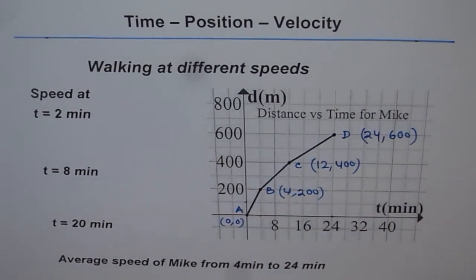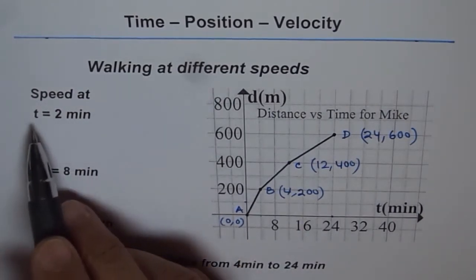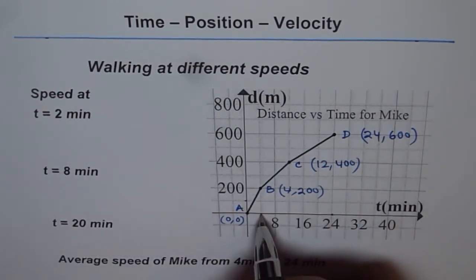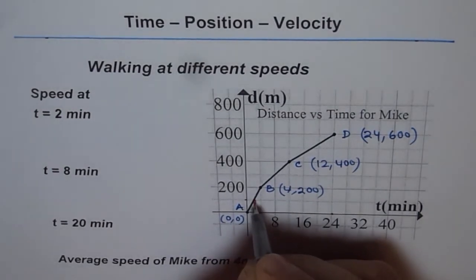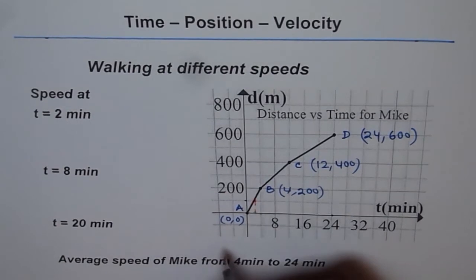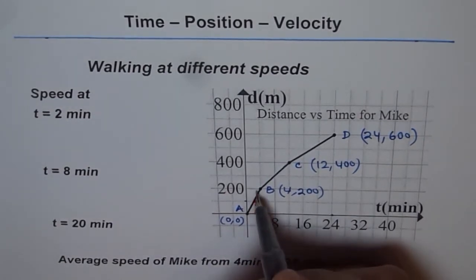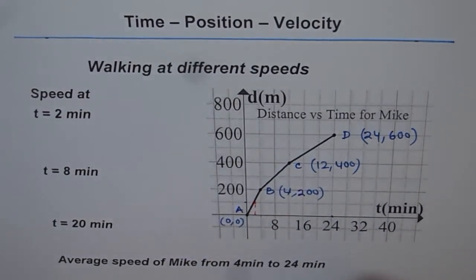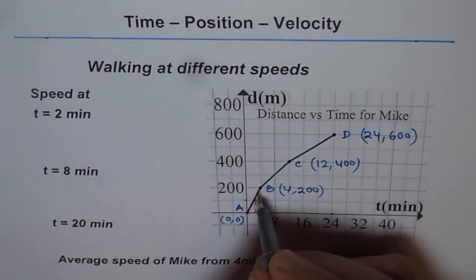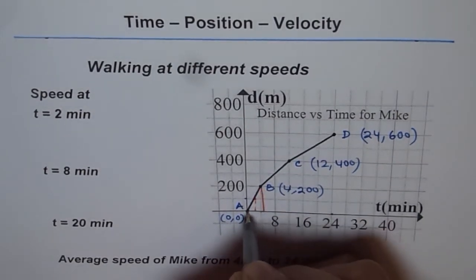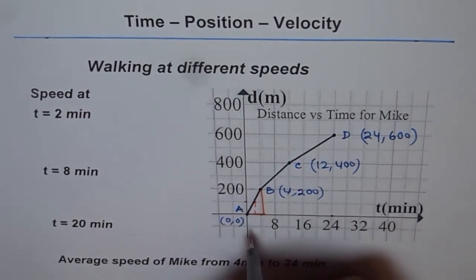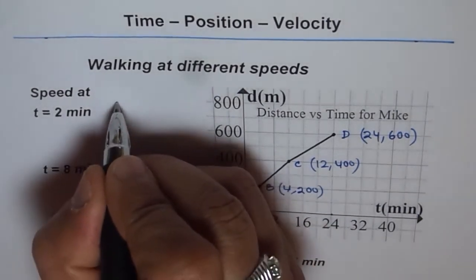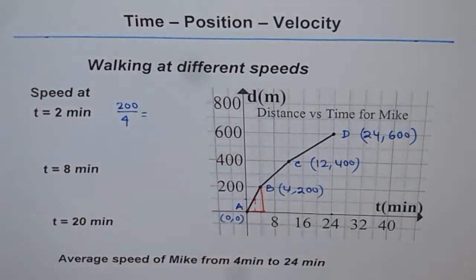Let's calculate speed from the graph. For speed at t = 2 minutes, since AB is a straight line, speed is the same all along this leg. We make a triangle: change in distance is 200 meters and change in time is 4 minutes.